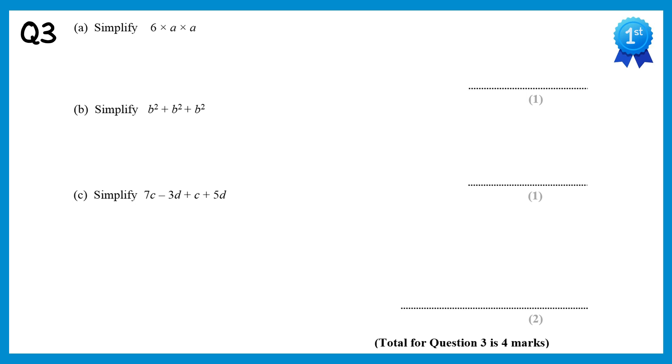For part a we need to do 6 times a times a. If you do a times a you get a squared, so it's just 6 times a squared which is 6a squared. For part b we need to do b squared, add b squared, add b squared again. There are 3b squareds here being added together so it's 3b squared.